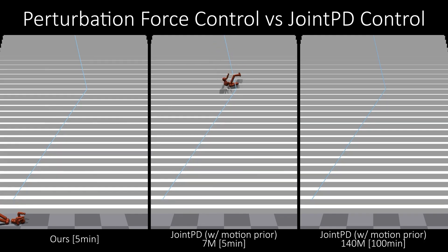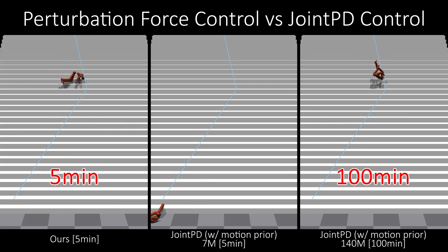Joint PD with motion priors also follows the defined trajectory. However, it also produces unnatural motion during this five-minute training. After sufficient training time, Joint PD with motion priors is also able to generate more natural motion. However, this requires 100 minutes, 20 times longer than our system.